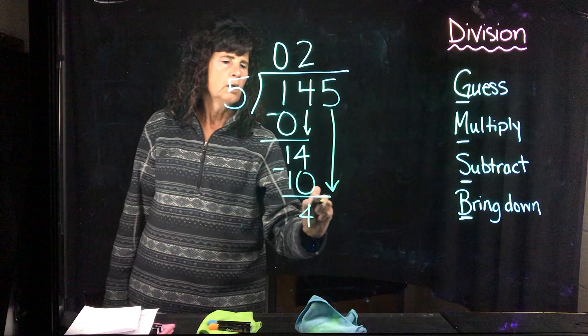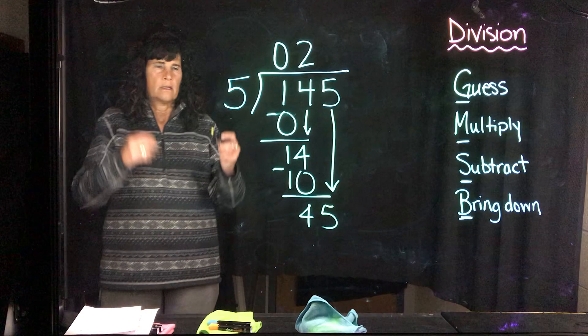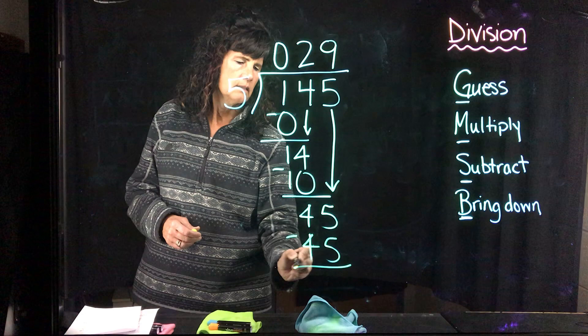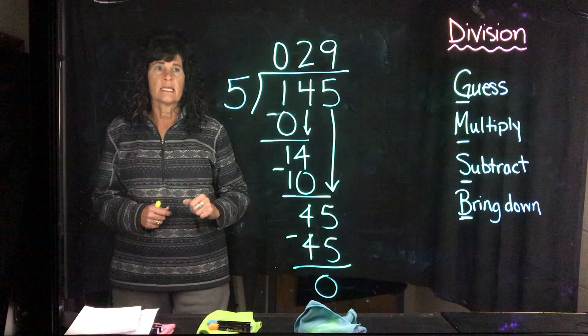Bring down. Look at that long arrow. I want to see those long arrows when we're doing this. Bring down the 5. How many 5's can I fit into 45? Know your multiplication tables. You can do this. The answer is 9, because 9 times 5 is 45. Multiply. 9 times 5, 45. Subtract. 0. Bring down. There's nothing there. We ran out of numbers. Our remainder is 0. Our answer is 29.